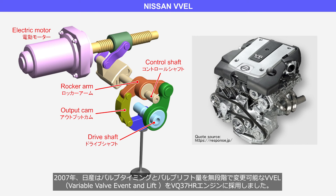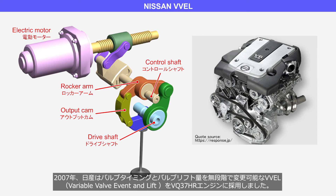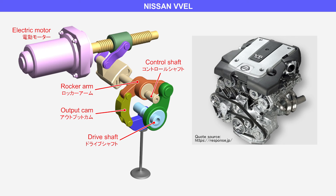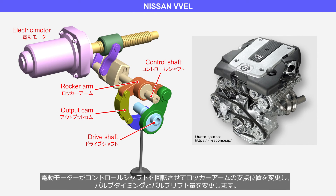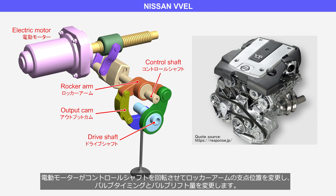In the same year, Nissan adopted the VVEL, Variable Valve Event and Lift, for the VQ37HR engine, which allows for continuous adjustment of valve timing and valve lift amount. The electric motor rotates the control shaft to change the pivot position of the rocker arm, thereby adjusting the valve timing and valve lift amount.